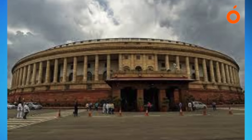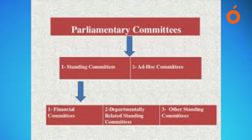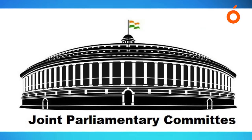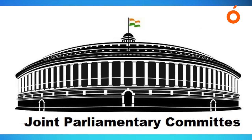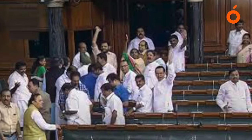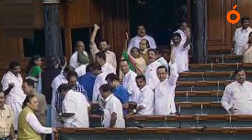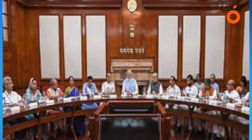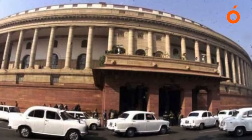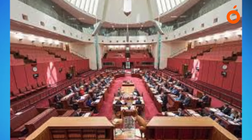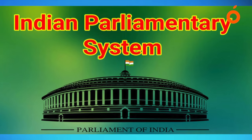There are committees to inquire into various matters like the Committee of Petition, the Committee of Privileges, the Committee on Government Assurances, and the Committee on Subordinate Legislation. There are also committees of administrative character relating to the business of the House, such as the Committee on the Absence of Members, the Business Advisory Committee, and the Rules Committee. A few committees are concerned with facilities of Members of Parliament, like the House Committee and Library Committee.